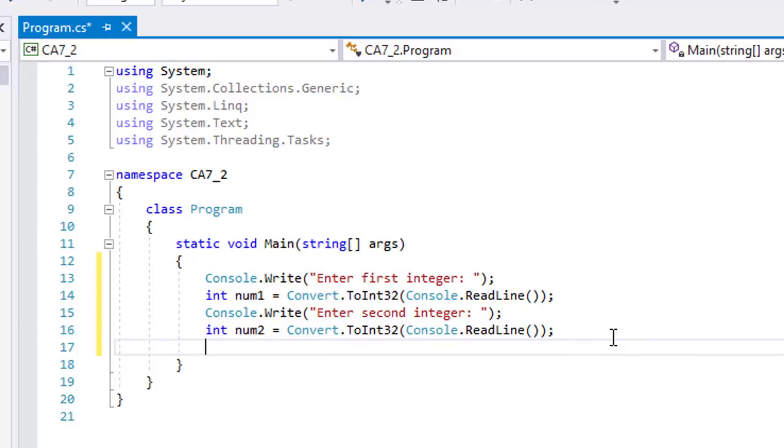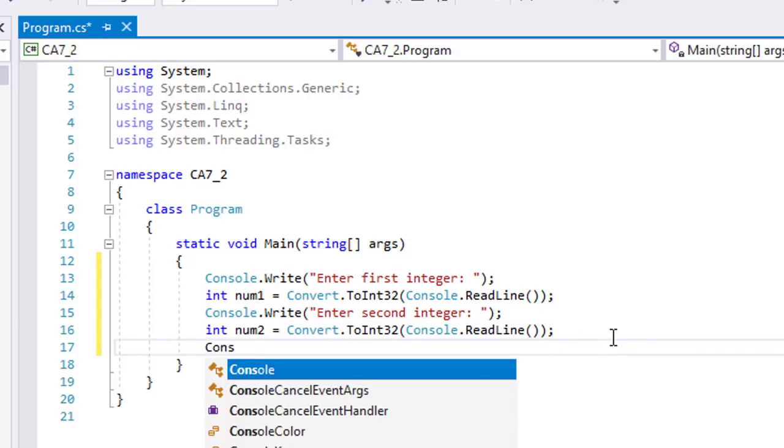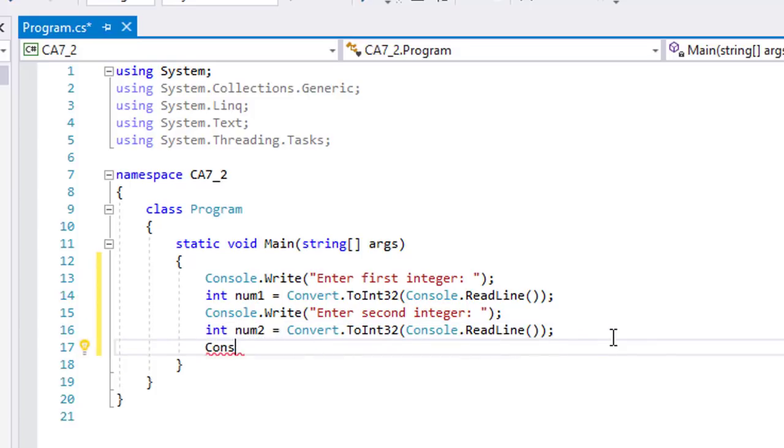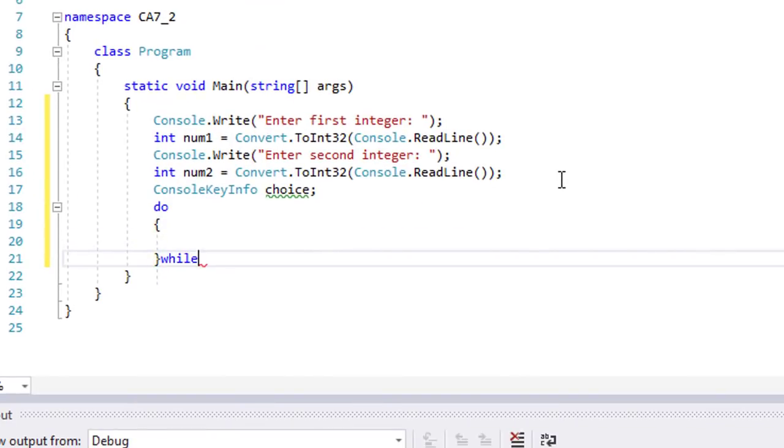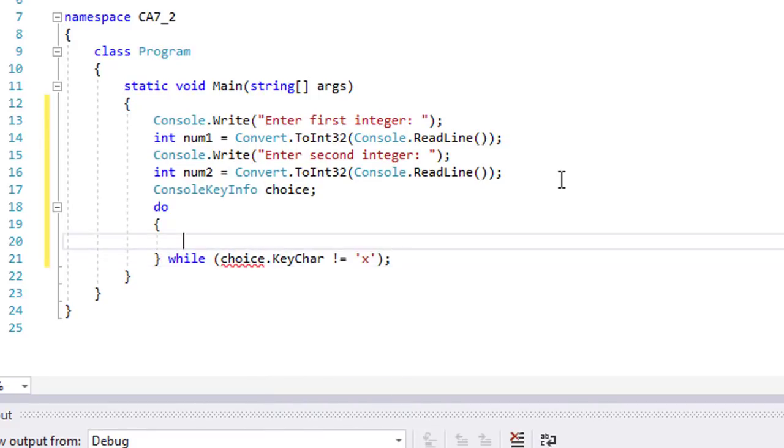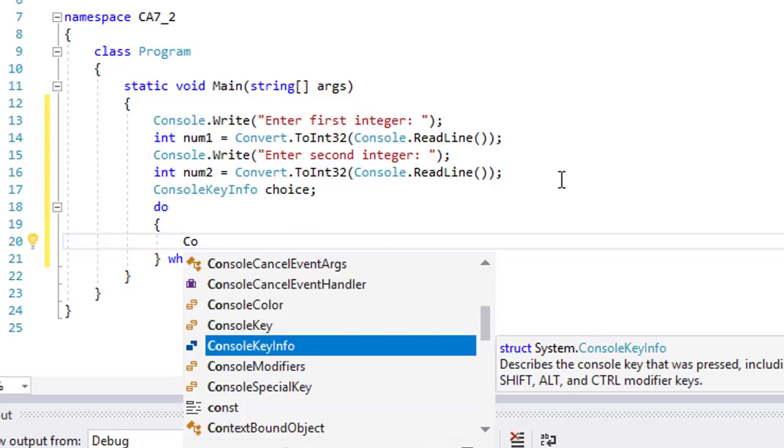We will try again the console.readkey, so our choice variable must be declared as console key info. The looping statement we will use is do while, to make sure that the menu will be shown at least once. Let's code the menu.